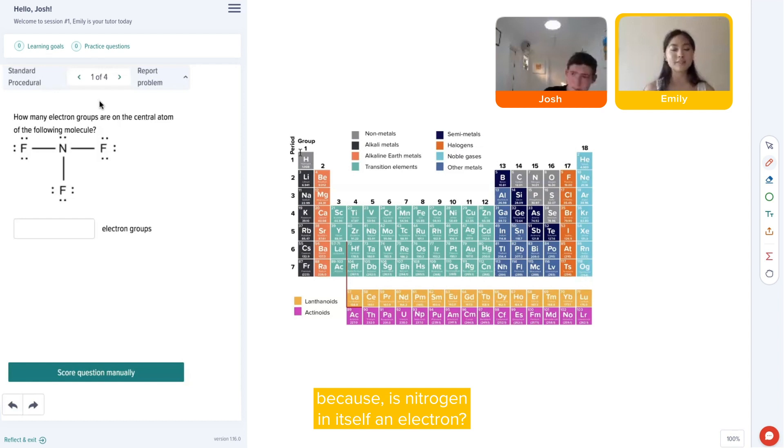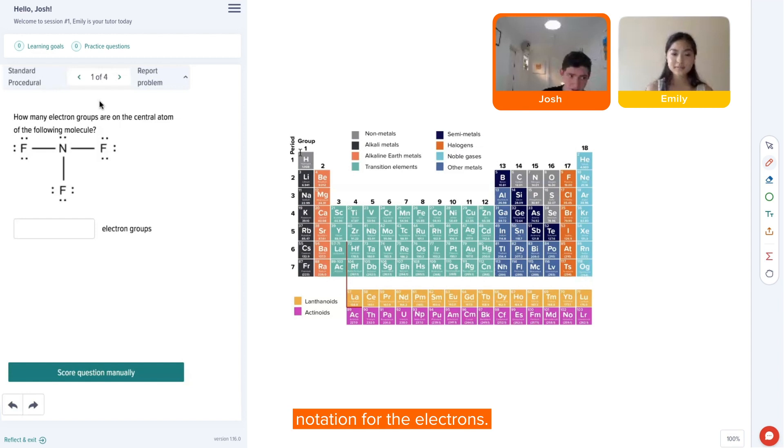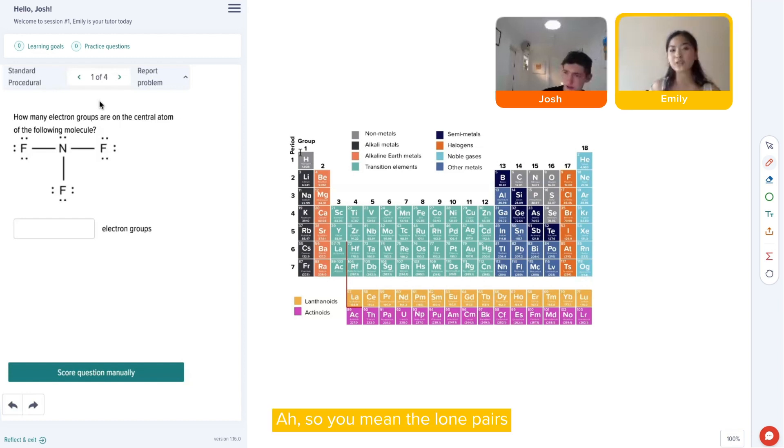Is nitrogen itself an electron? No, but the notation for the electrons... So you mean the lone pairs at the top of the nitrogen? Yes, perfect. So that does count as an electron group, so we've got four electron groups around it. Awesome, excellent.